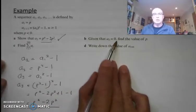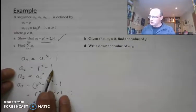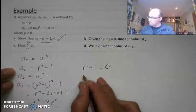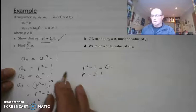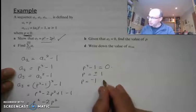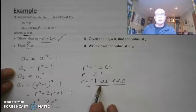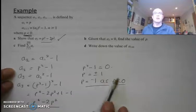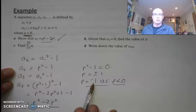Part B: given that a2 is equal to 0, find the value of p. We've worked out that a2 is p squared minus 1. So p squared minus 1 equals 0, meaning p equals plus or minus 1. We've been told in the question that p is less than 0, so p equals negative 1. Remember, always give your explanation as to why you've discounted one solution — you need to write both solutions down and then discount one. The reason here is that p is less than 0, so p equals negative 1.